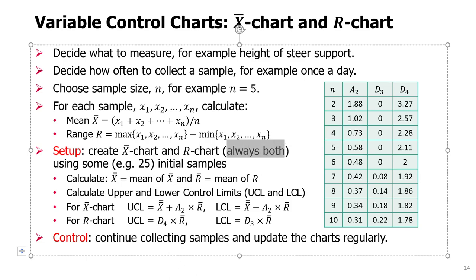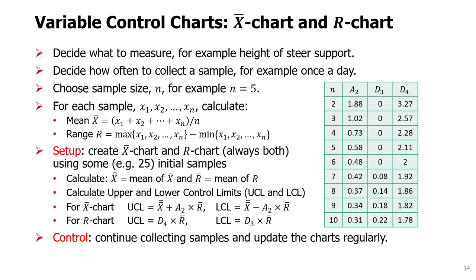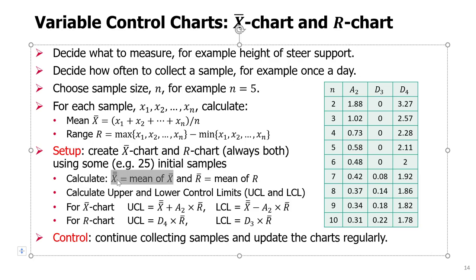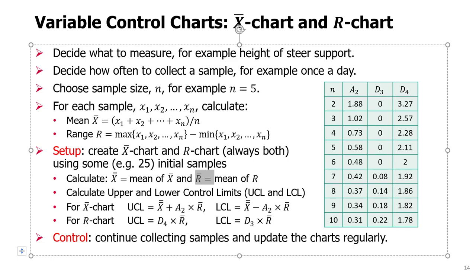Remember, we always use both at the same time, and we create them using some initial samples. In this example, we'll use 25 initial samples — we collect a sample every day for 25 days, and then we are ready to set up those two charts. For each of them, we will need a central value, which will be a mean. For the X-bar chart, there will be the mean of x-bar values, denoted as x double bar, and for the R-chart, there will be the mean of r values, which will be denoted by R-bar.